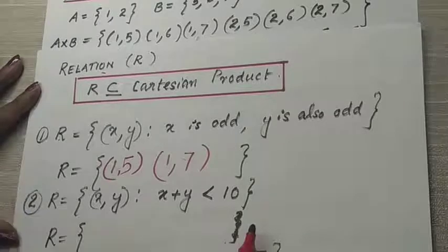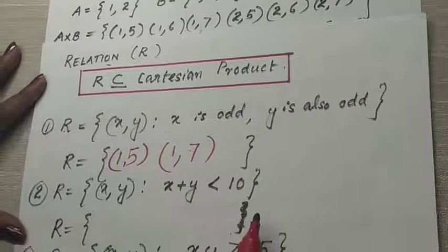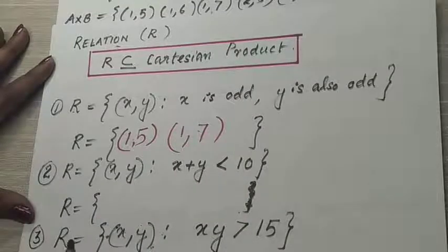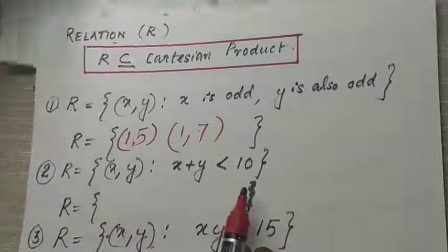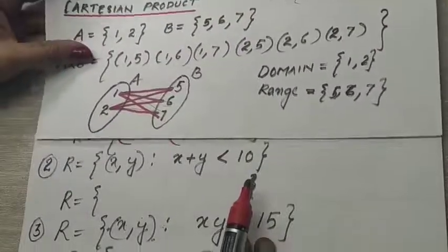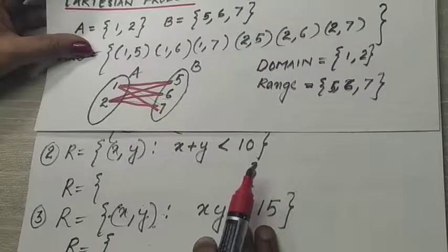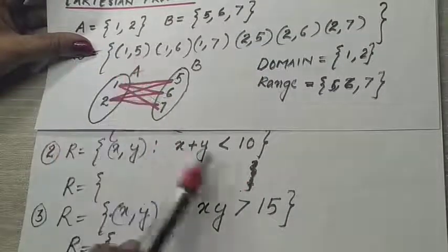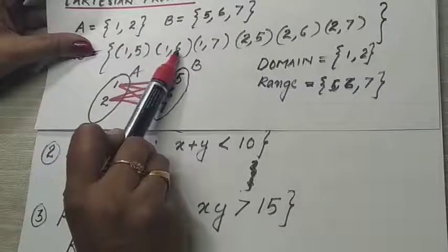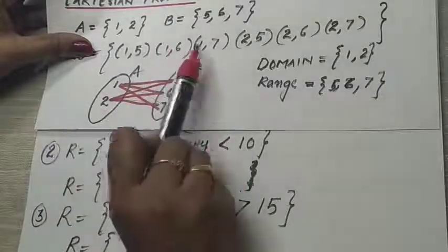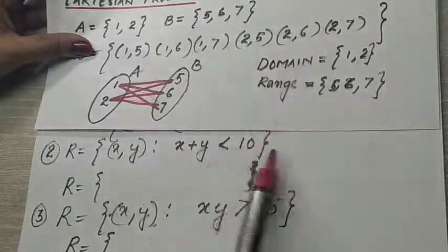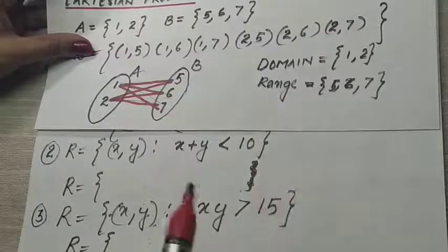The next example: relation R = {(x,y) such that x + y < 10}. Taking values from the Cartesian product: 1+5=6 < 10, 1+6=7 < 10, 1+7=8 < 10, 2+5=7 < 10, 2+6=8 < 10, and 2+7=9 < 10 — all satisfy the condition.